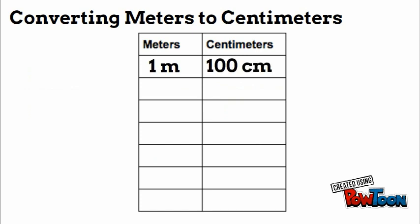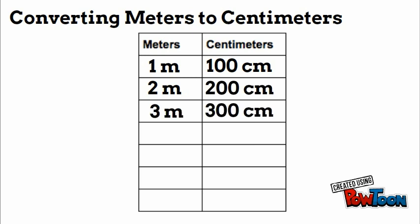Two meters — add another hundred — is 200 centimeters. Three meters is 300 centimeters, four meters is 400 centimeters. Notice we just keep adding 100 centimeters. Let's mix it up: let's go to nine meters.